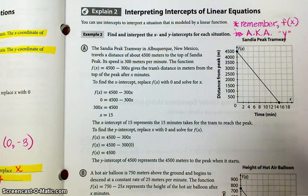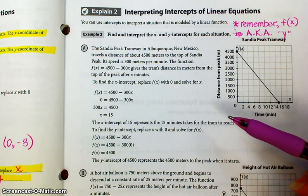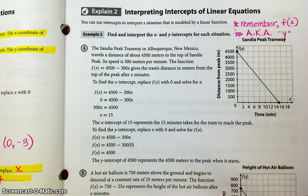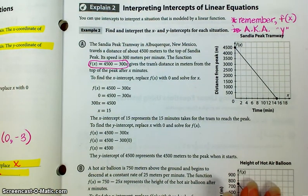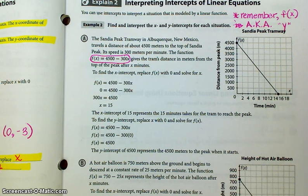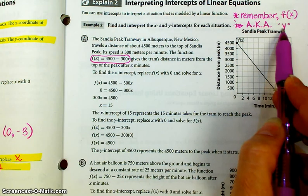Okay, I'm now on page 209. We can start looking at actual situations that are described that we could solve for an x-intercept and a y-intercept and helps us kind of visualize what's going on in a graph or a particular situation. This particular question or illustration says the Sandia Peak tramway in Albuquerque, New Mexico travels a distance of about 4,500 meters to the top of Sandia Peak. Its speed is 300 meters per minute. The function f(x) = 4500 - 300x gives the tram's distance in meters from the top of the peak after x minutes.